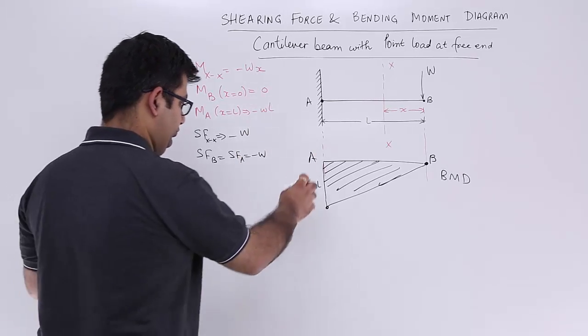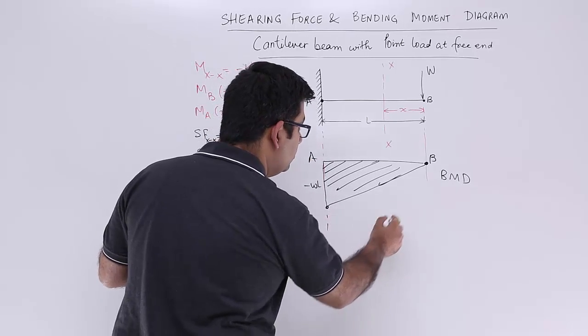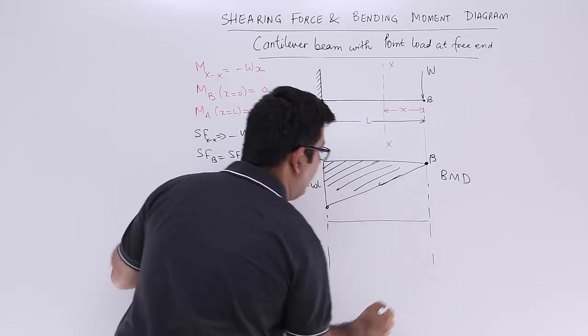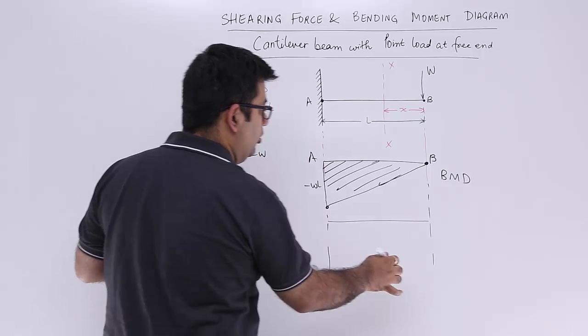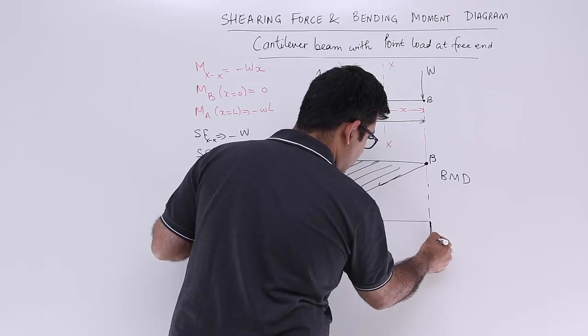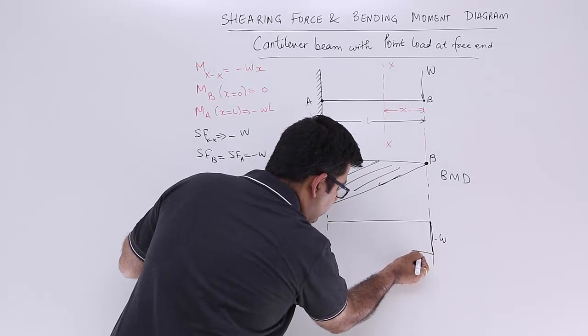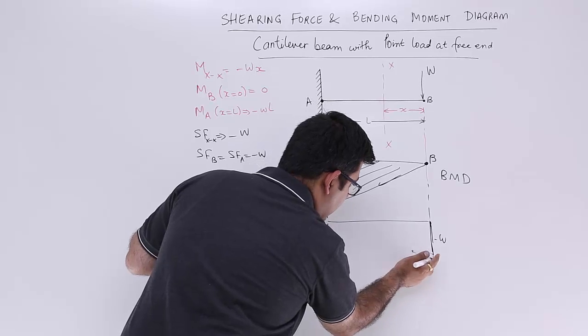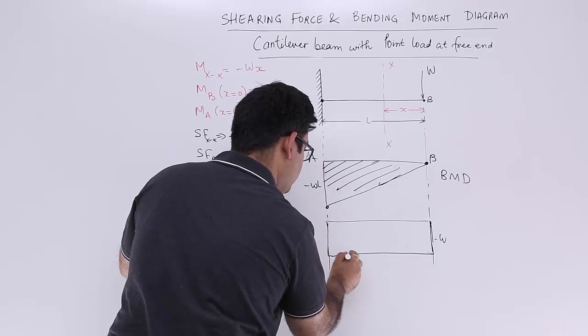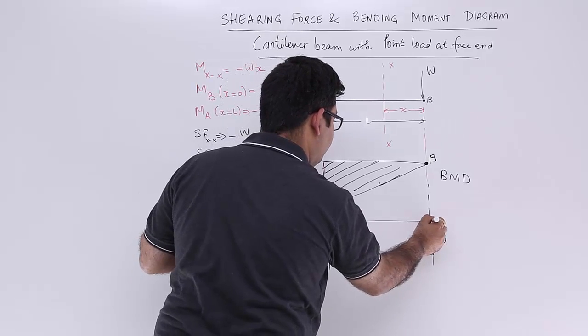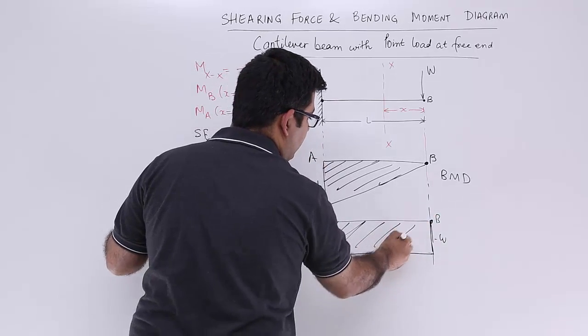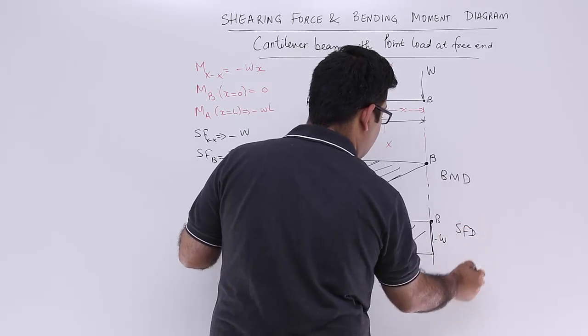So if you bring it further down, try and make sfd and BMD below the main diagram only. So at b it is minus w and it will be same till point a. So this is point a and this is point b. So this is again a negative shear force. So this is sfd.